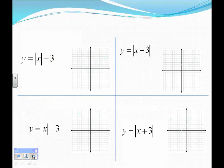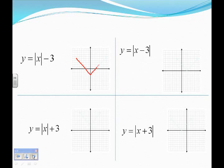When you have a variable outside an absolute value sign, you either go up or down. If it's inside an absolute value sign, you either move left or right. Subtraction is down or right, addition is up or left.